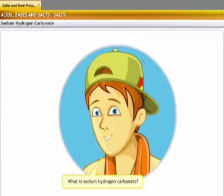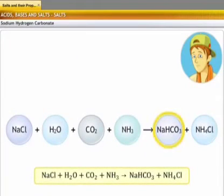What is sodium hydrogen carbonate? Sodium hydrogen carbonate is produced when a concentrated solution of sodium chloride reacts with ammonia and carbon dioxide.